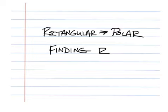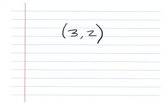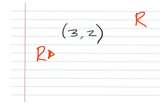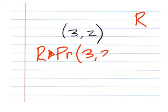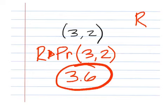Example number 5: rectangular to polar, finding R. The problem is (3, 2). Again, hit Second, Apps — you're going from rectangular to polar and finding R. That would be number 5. It looks like this: R arrow polar, then R. Type in 3 comma 2 and you should come back with a value of 3.6.